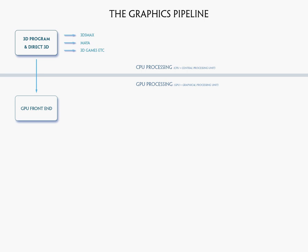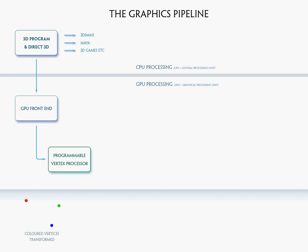At this point, the data being passed to the GPU is in the form of vertices. That vertex data gets passed to the programmable vertex processor. The vertices are transformed here — when they come in from the 3D program, they're in object space, meaning their positions are relative to the center of the object they belong to. In order to get placed on the screen, the verts need to be placed relative to their positions on the screen, and that happens right here in the programmable vertex processor.